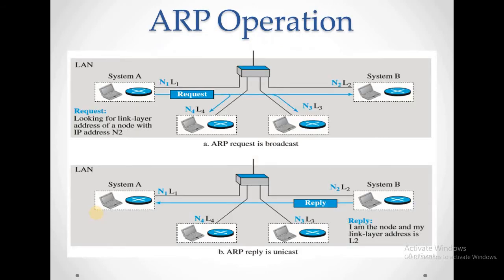Here you can find the operation of ARP — Address Resolution Protocol. There are four networks; they are LAN networks. You have system A, system D, and the remaining two systems. System A has a network address as well as a logical address, and system A wants to send some data to system B. When it wants to send data to system B, system A does not have the logical address of system B, so it is going to send a request message to all the nodes in the network.